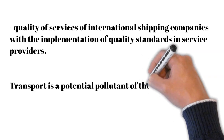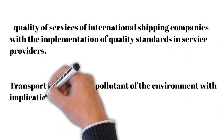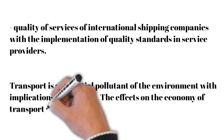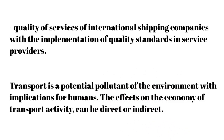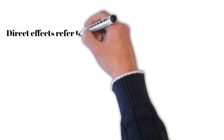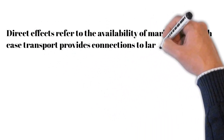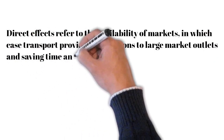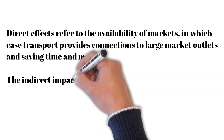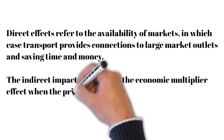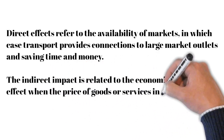The importance of transport as a potential pollutant of the environment has implications for humans. The effects on the economy of transport activities can be direct and indirect. Direct effects refer to the availability of markets, in which case transport provides connections to large market outlets and saves time and money. Indirect impact is related to the economic multiplier effect, where the price of goods and services increases with diversification.